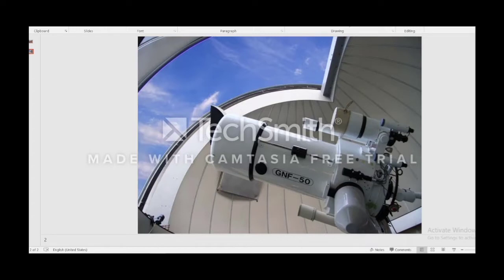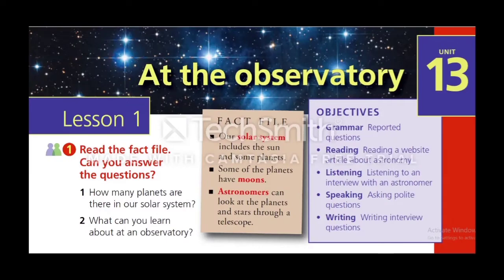So what can you see at the observatory? Telescopes — we can see telescopes. Here we have the objectives of Unit 13: grammar on reported questions, reading a website article about astronomy, listening to an interview with an astronomer, speaking to ask polite questions, and writing interview questions.